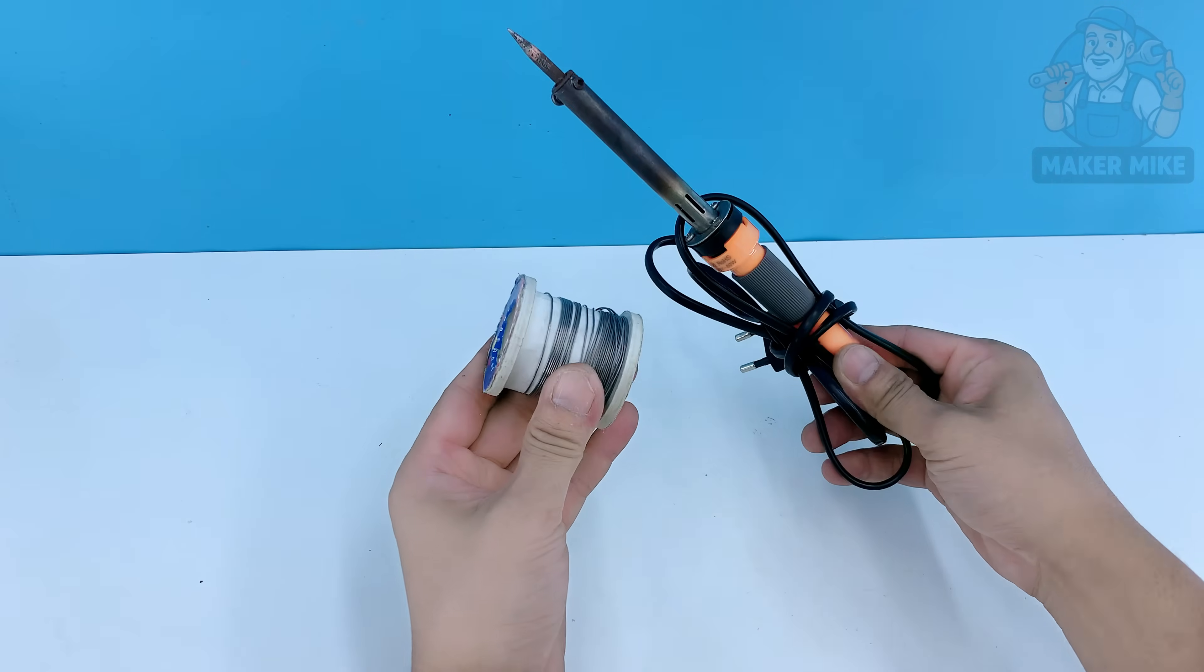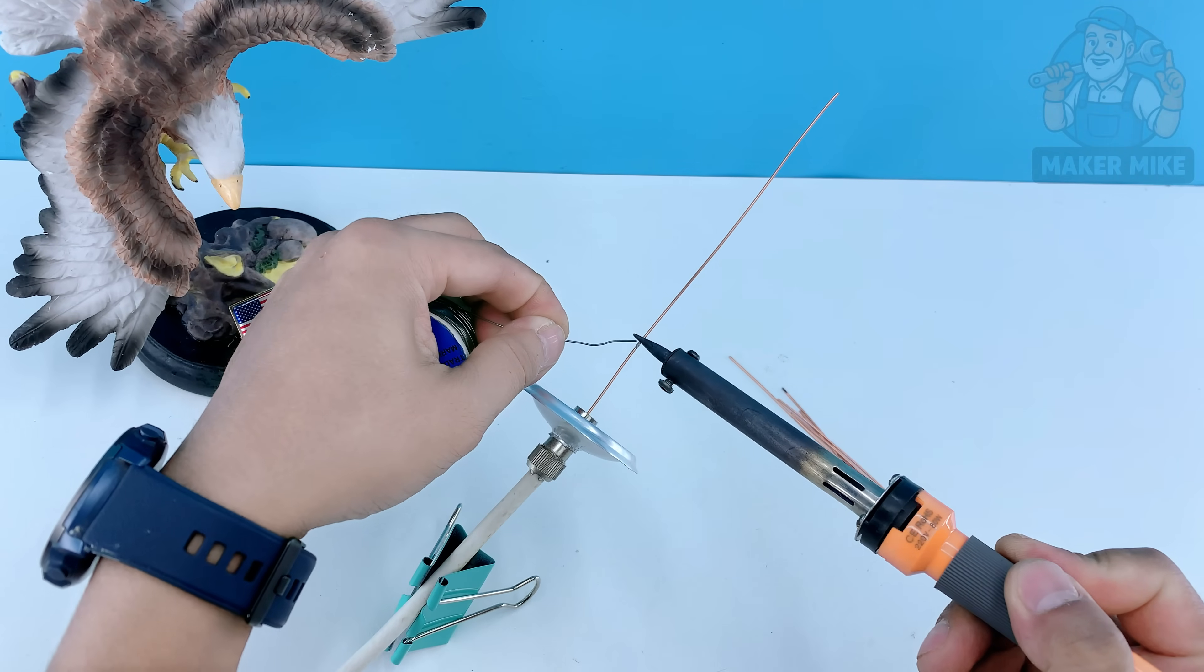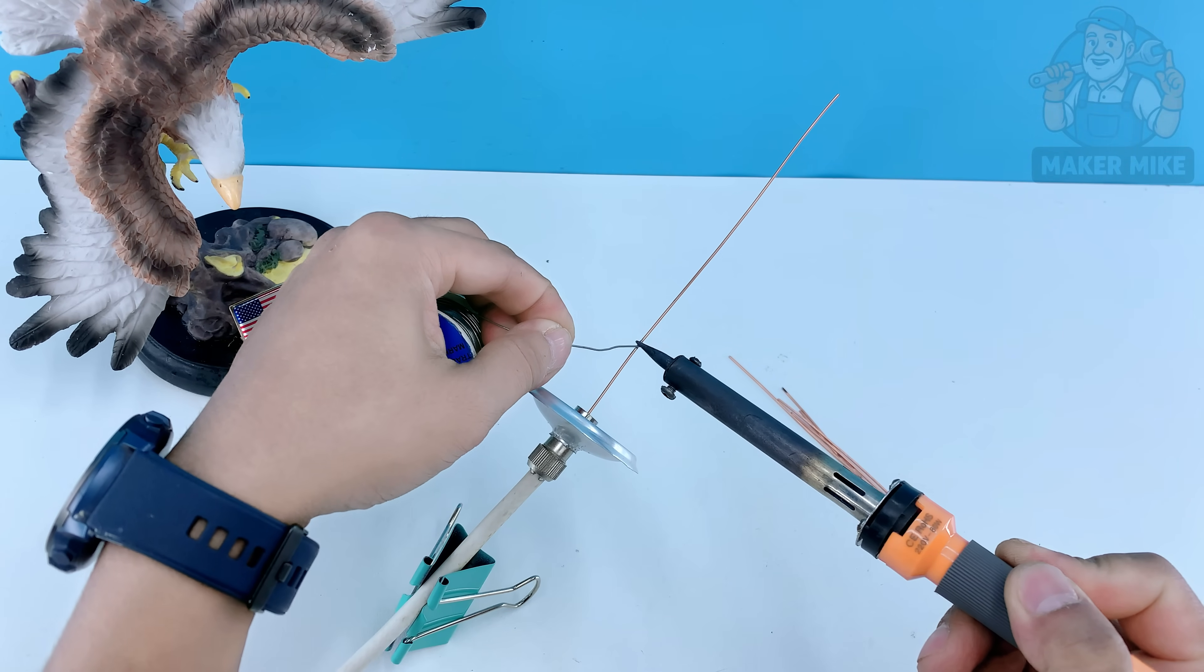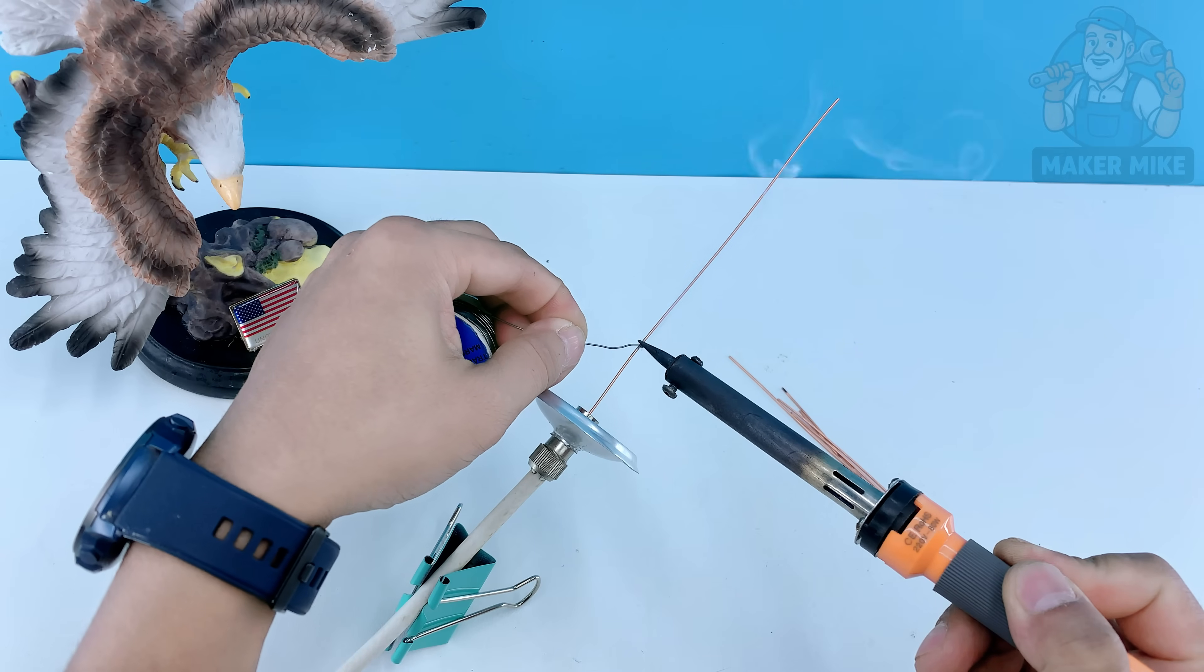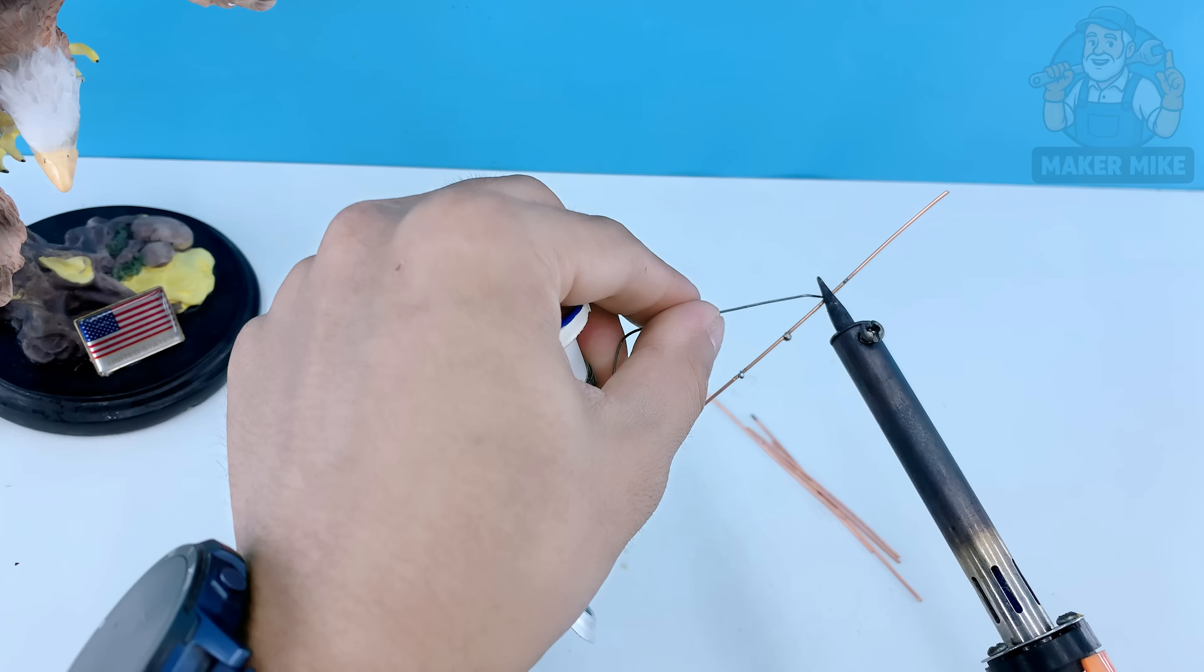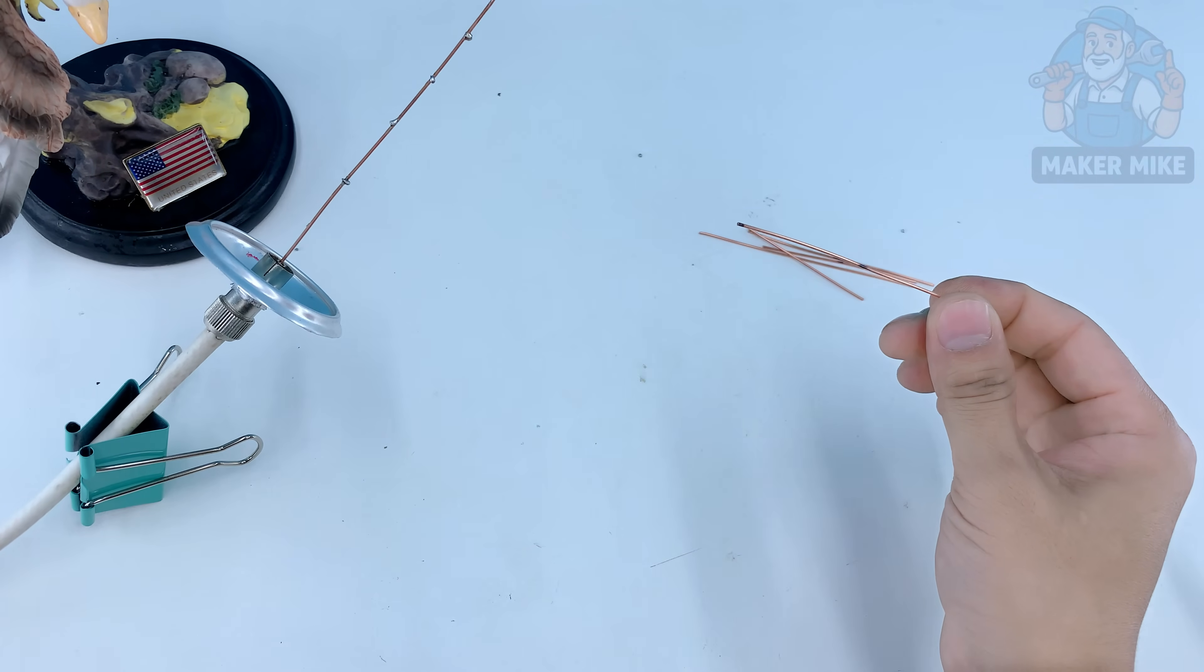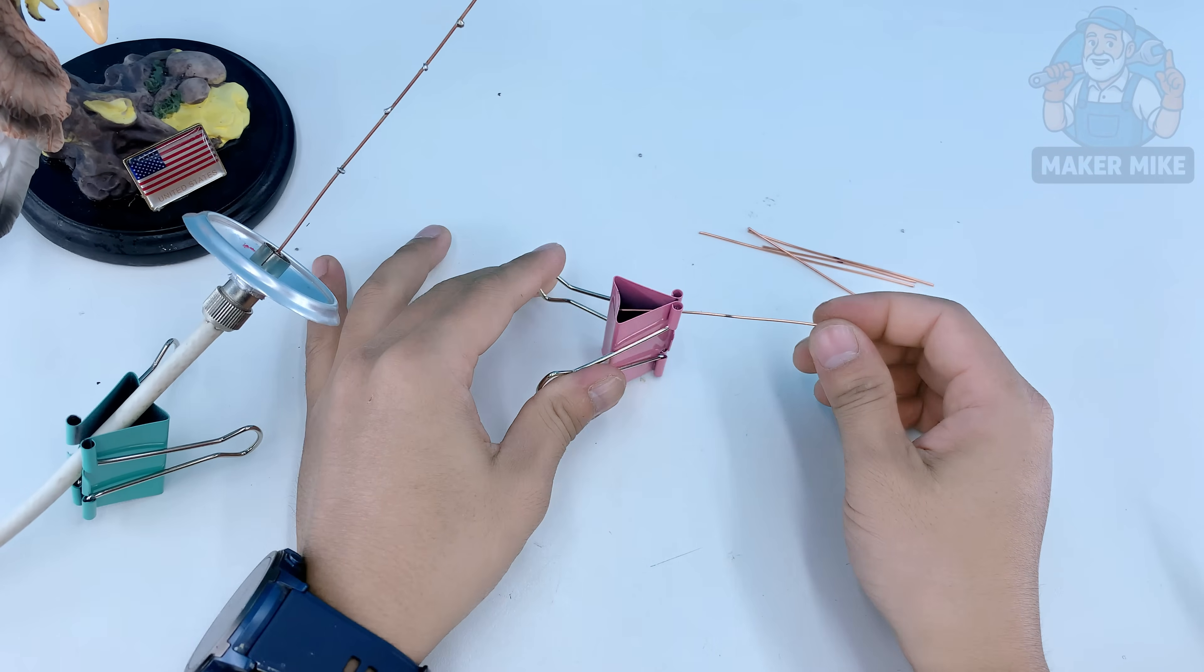Now that we've got all five copper wires cut and cleaned, it's time to line them up. Place them from the longest to the shortest just like steps on a ladder. Then mark the center of each piece that's where we'll attach them to the main signal line later. Keeping them in order makes the next step a whole lot easier and helps your antenna work more efficiently.